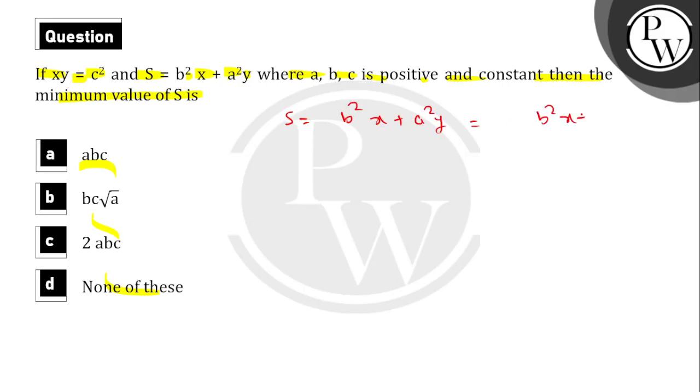So b square x plus a square c square upon x equals a square x. If we differentiate, that is d upon dx.